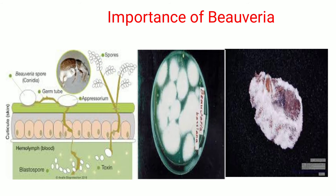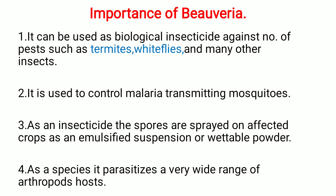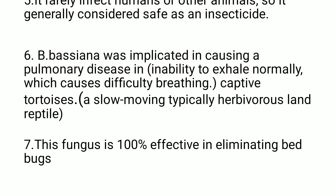The next is the importance of Beauveria bassiana. It can be used as a biological insecticide against termites, whiteflies, and many other insects. It is also used to control malaria-transmitting mosquitoes. As an insecticide, the spores are spread on affected crops as an emulsified suspension or wettable powder. The species parasitizes a wide range of arthropod hosts. It rarely infects humans or animals, so it is considered a safe insecticide that does not cause harm to humans or animals.